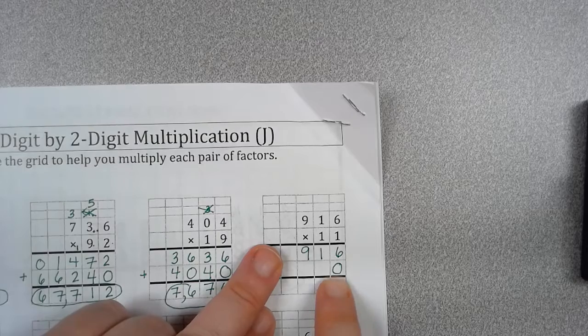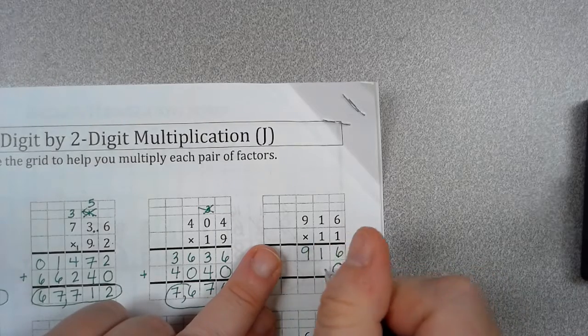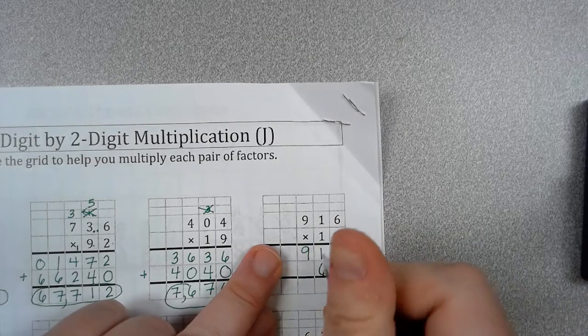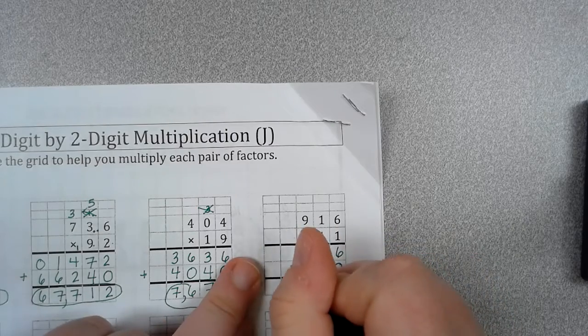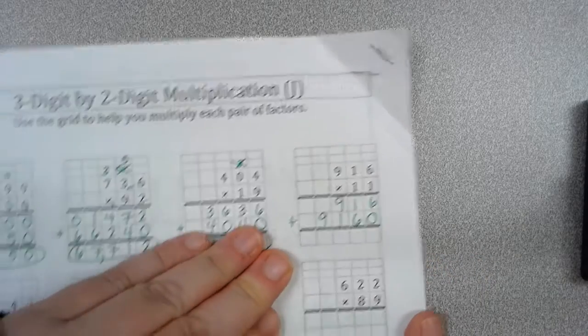I have my 0 here. Once again, 1 times 6 is 6. 1 times 1 is 1. 1 times 9 is 9. Now, all we have to do is add.